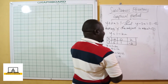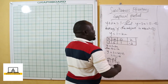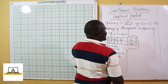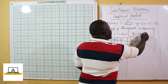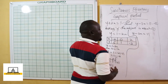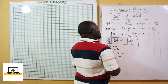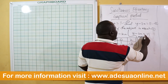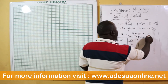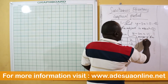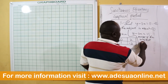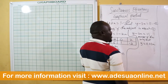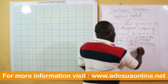We move to the second equation, y minus 3x equals 11. Making y the subject, we shall have y equals 11 plus 3x. Now we are going to pick three values of x and find the corresponding y values.